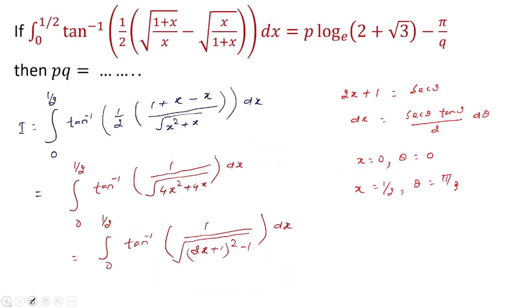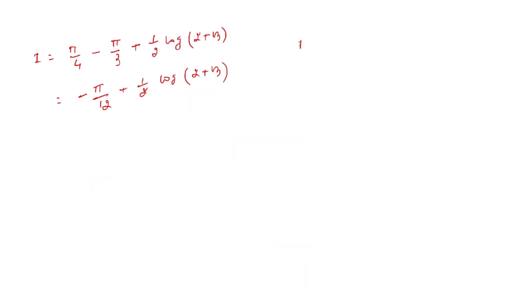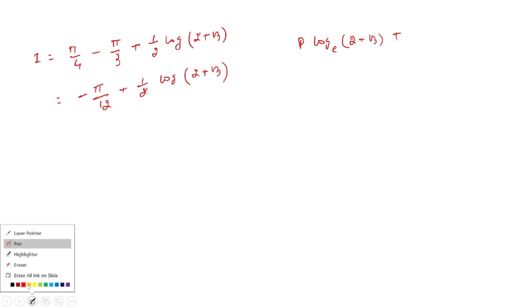Comparing with the result, this is p log_e(2 + √3) - π/q. So comparing, p equals 1/2 and q is 12.